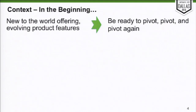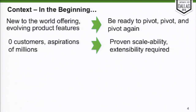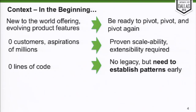About a year ago we decided to start building this product, but we didn't know exactly what it was going to be. From a technical standpoint, you want to make sure whatever you choose is quite adaptable, because we knew we were going to be pivoting quite a bit. We had no customers and no product, but aspirations for millions — so scalability and extensibility were key considerations. We also had zero lines of code, which is both awesome and scary.